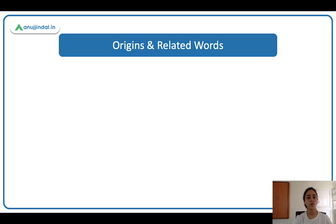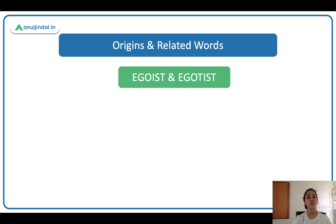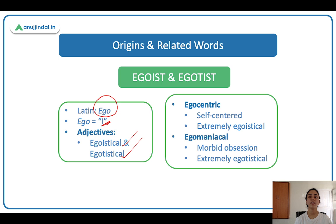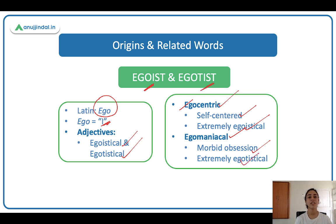Now we'll learn the origins of the words and some related words. The words egoist and egotist come from the Latin word 'ego,' which means 'I' or 'me.' Their adjectives are egoistical and egotistical. A related word is egocentric, meaning self-centered or self-involved — an extreme form of an egoistical person. Egomaniacal refers to someone with a morbid, unhealthy, and abnormal obsession with themselves — an extreme form of an egotistical personality.